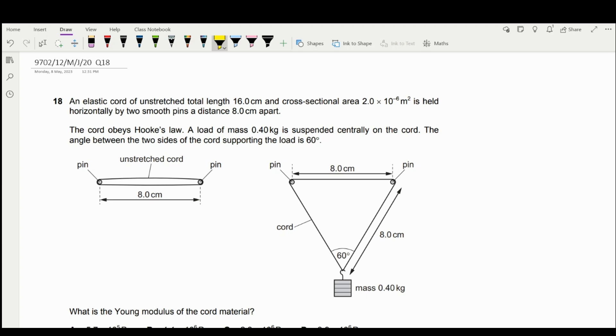We will try out this question from May, June 2020. So you have an elastic cord of length 16 cm, cross-section area of 2.6 times 10 to the power of negative 6 m².